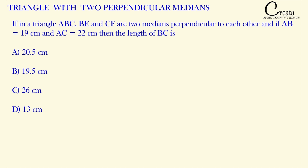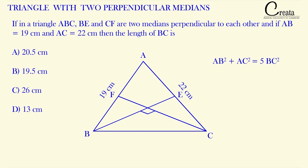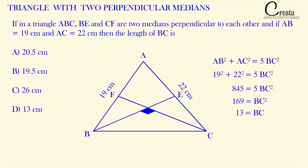Let's make the figure: triangle ABC with medians CF and BE perpendicular to each other, AB = 19 cm, AC = 22 cm. Applying the formula AB² + AC² = 5BC²: 19² + 22² = 5BC², which gives BC = 13 cm. So the answer is option D — a simple application of the formula.